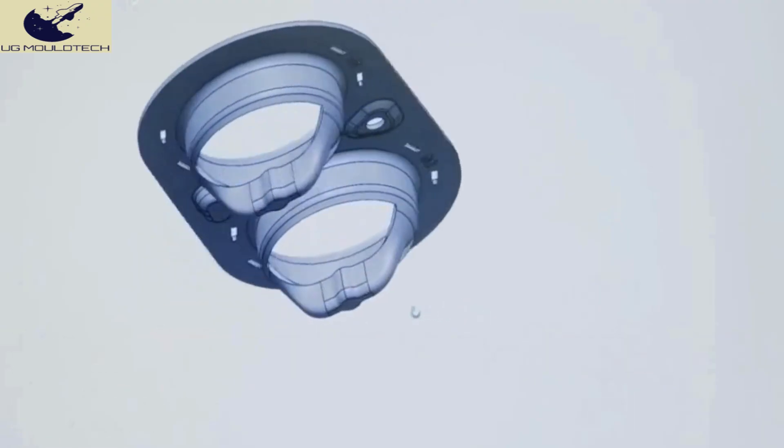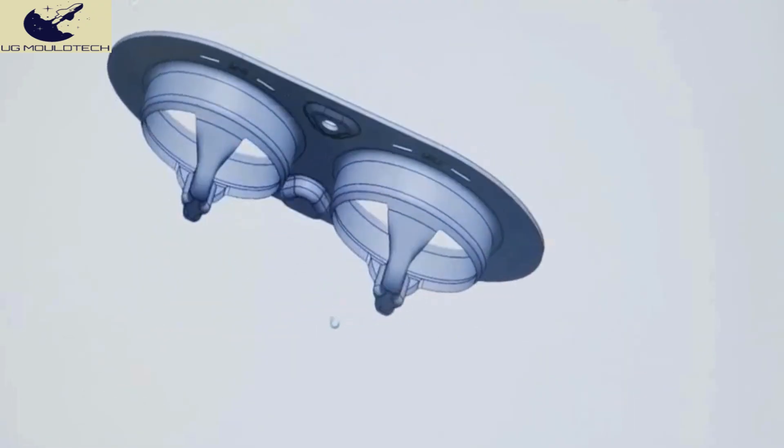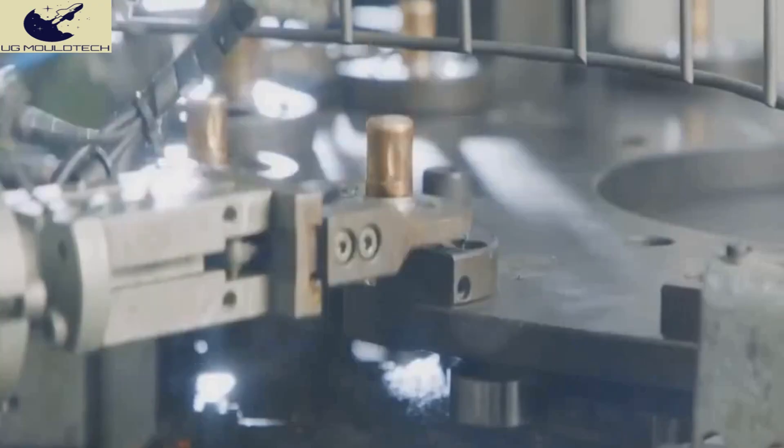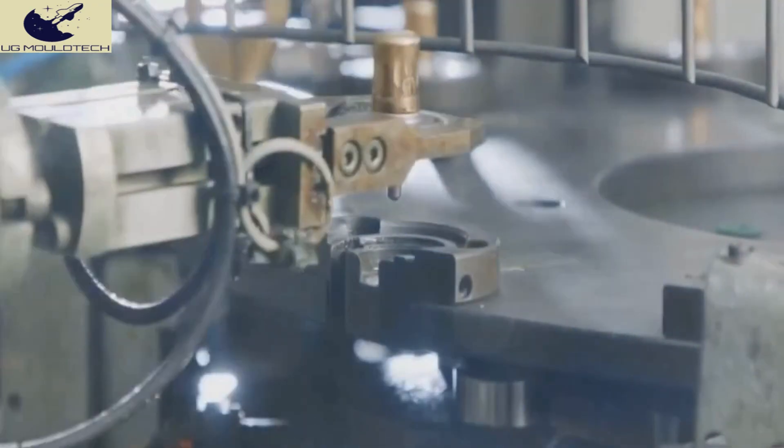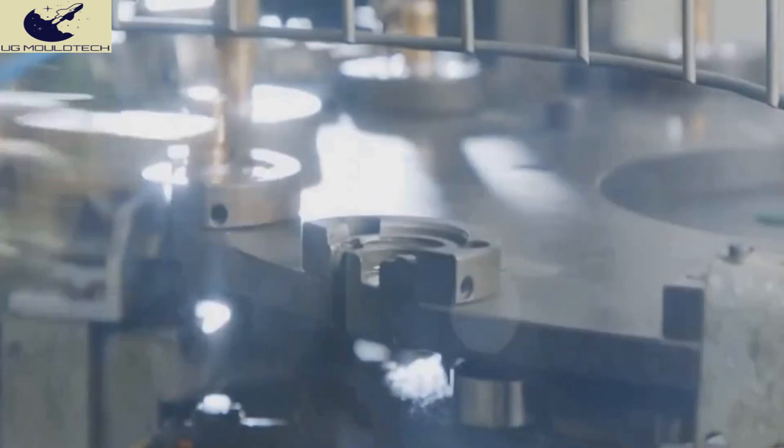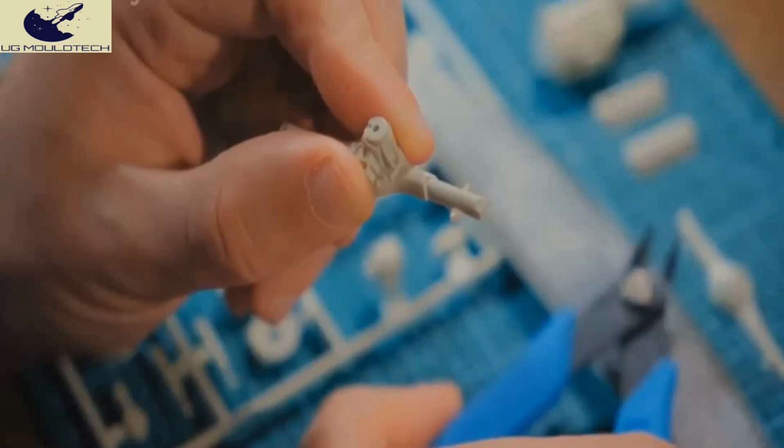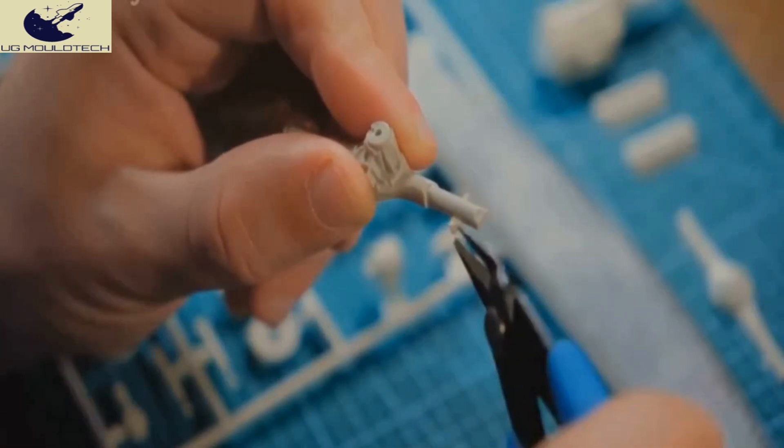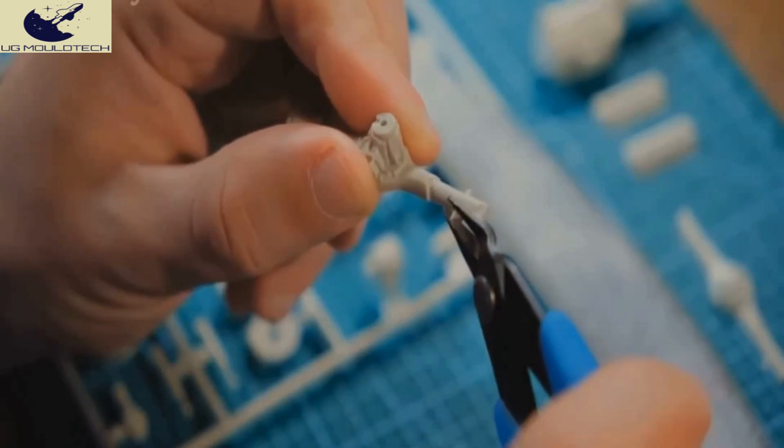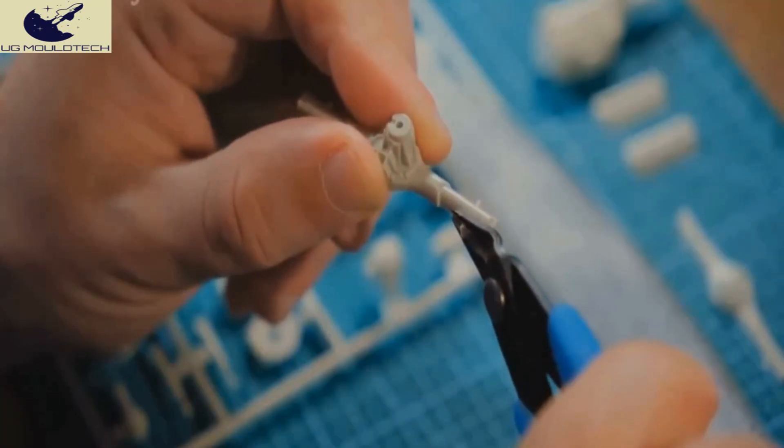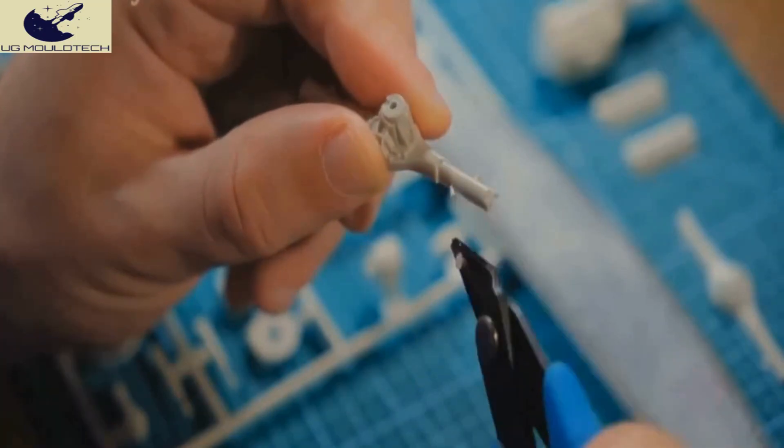When designing a plastic part, it's crucial to consider how it will be assembled. A well-thought-out design can significantly streamline the assembly process, reducing both time and costs. Opt for designs where parts snap together effortlessly, eliminating the need for screws or other fasteners. This approach is both cost-effective and time-efficient.